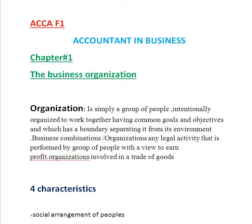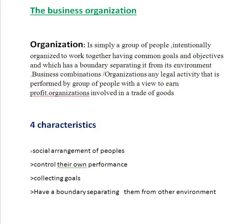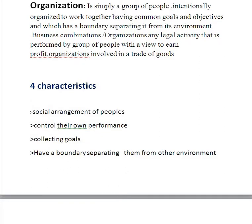Business organizations are any legal activity that is performed by a group of people with a view to profit. An organization involved in the trade of goods is an example of an organization. Now let's see the characteristics of an organization and how they exist. The first one is they have a social arrangement of people.